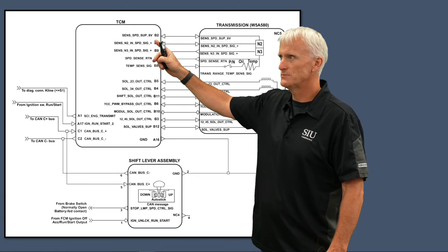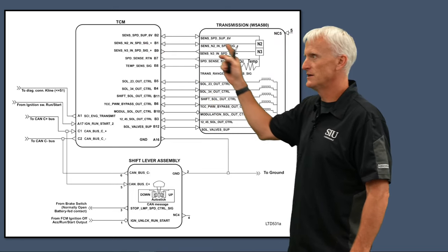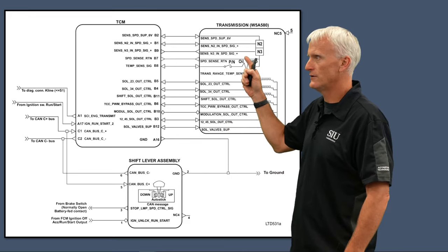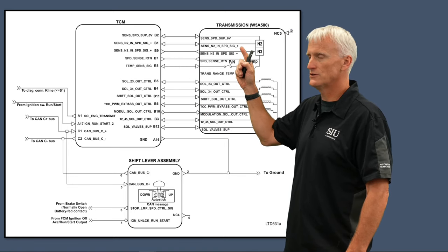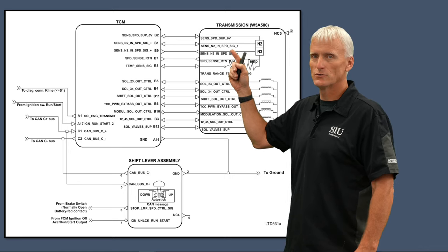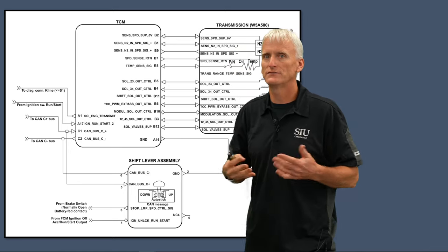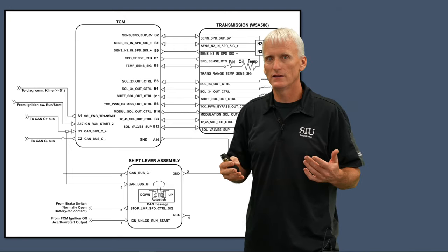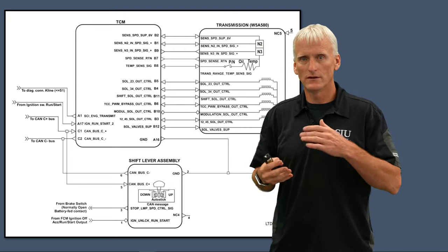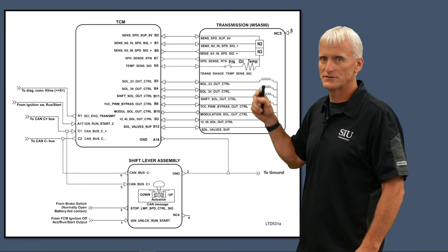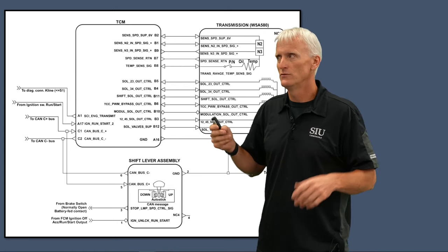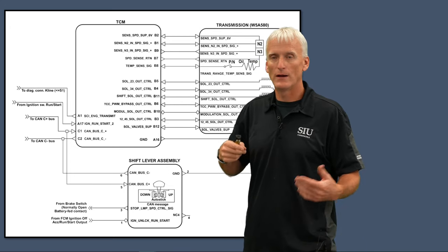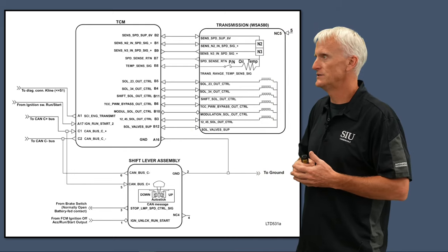Going down the list, we've got the speed sensor supply — six volts actually feed the N2 and N3 speed sensors. Those are Hall effect sensors with a ground going right back to the computer. These two sensors create a digital square wave pattern based on input shaft speed. They need two of them because the N2 speed sensor won't read anything in first and fifth gear — it only reads input shaft speed in second, third, and fourth. The N3 speed sensor covers first and fifth, though it's not a true input shaft speed rotation since it's working in a gear reduction during those gears.